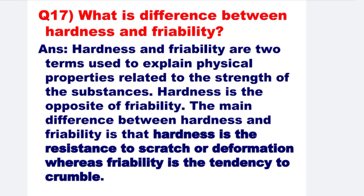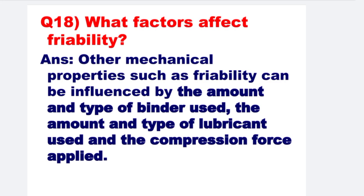Next: What is the difference between hardness and friability? Hardness and friability are two terms used to explain physical properties related to the strength of substances. Hardness is the opposite of friability. The main difference is that hardness is the resistance to scratching or deformation, whereas friability is the tendency to crumble.